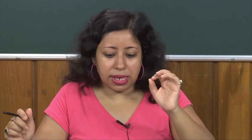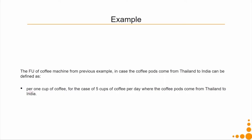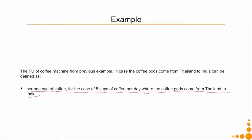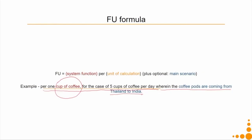In this case, my functional unit will change — it becomes per one cup of coffee for the case of five cups of coffee per day, where the coffee pods come from Thailand to India. The system function is making a cup of coffee; the unit of calculation is per one cup of coffee for the case of five cups per day; plus the scenario where coffee pods come from Thailand to India. You might have multiple key scenarios as well.